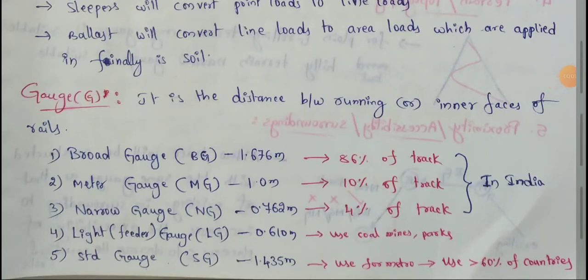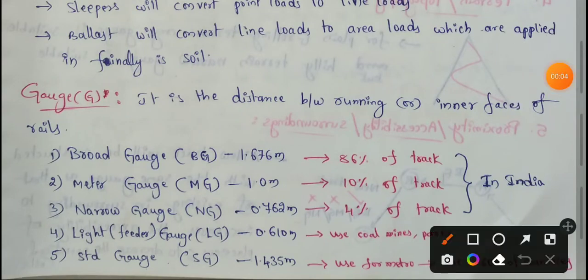Next topic: gauge. So, this is the railway gauge. It is the distance between the running or inner faces of rails.